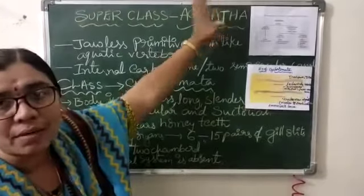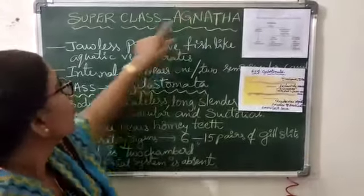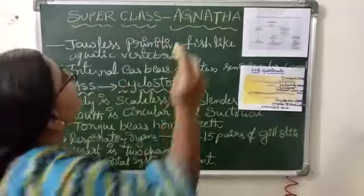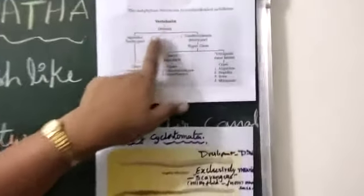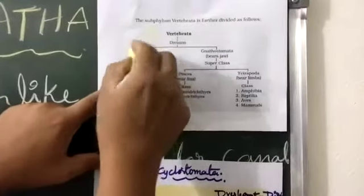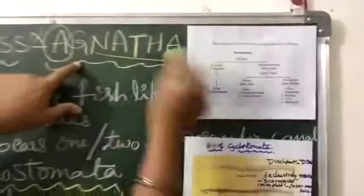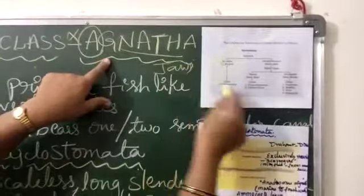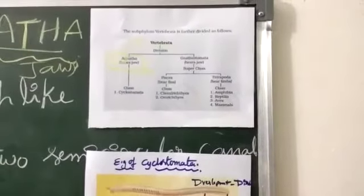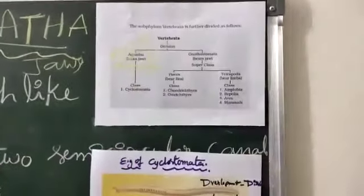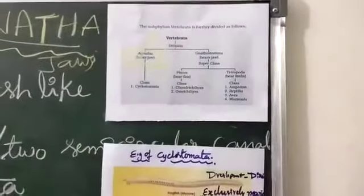Agnatha belongs to the subphylum Vertebrata. Agnatha means: 'A' means absent, and 'gnatha' means jaws. So jaws are absent in these animals. Those are called Agnatha — this is the super class of the vertebrate subphylum.